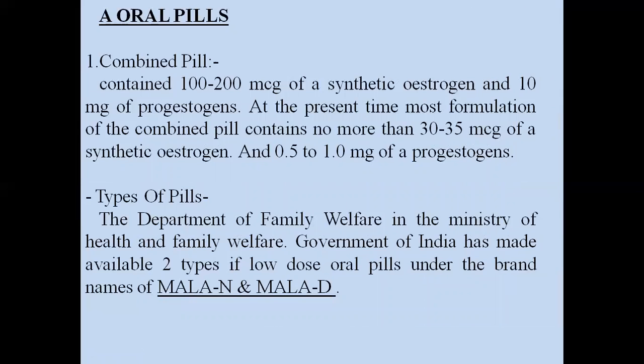The first combined pills contained 100 to 200 micrograms of synthetic estrogen and 10 mg of progesterone. At the present time, the newest formulation of the combined pill contains not more than 30 to 35 micrograms of synthetic estrogen, because higher doses had many side effects. As development progressed, the concentration of synthetic estrogen was reduced, and progesterone was also reduced to 1 mg.